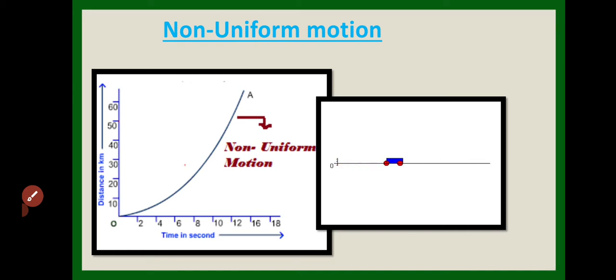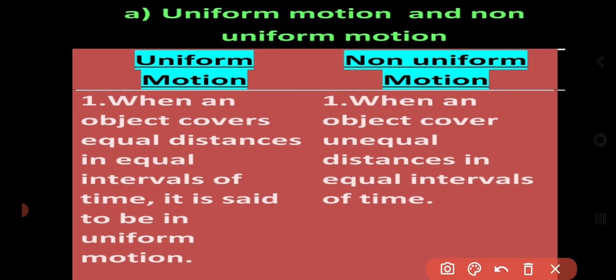Now let us look at the difference between uniform and non-uniform motion. First, in uniform motion an object covers equal distance in equal interval of time, whereas in non-uniform motion an object covers unequal distance in equal interval of time. Second, in uniform motion the speed is constant, whereas in non-uniform motion the speed varies.